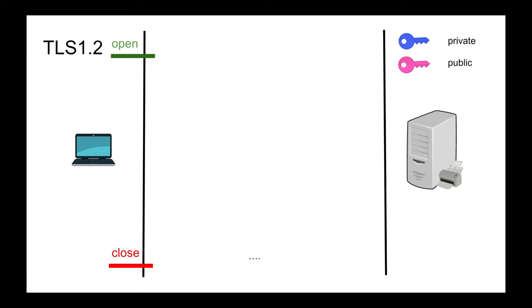Say I have a client and a server. I want to make a GET request and establish an HTTPS session. The first message is a Client Hello — that's the TLS handshake. In TLS 1.2 there are two round trips. The Client Hello says: here are the key exchange algorithms I support — Diffie-Hellman, RSA — and the symmetric algorithms I support, like AES.